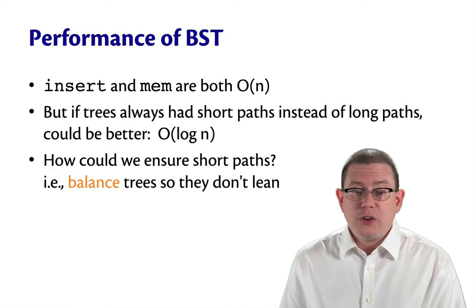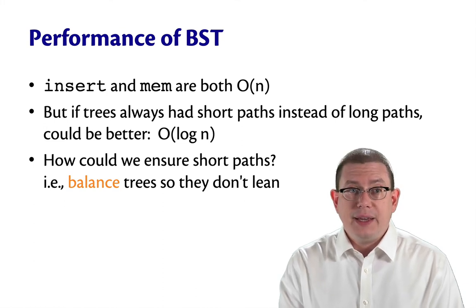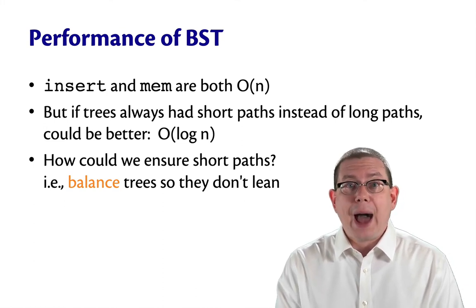How could we get shorter paths? We need to balance the trees so that they're not leaning, even if the insertion order happens to be bad.